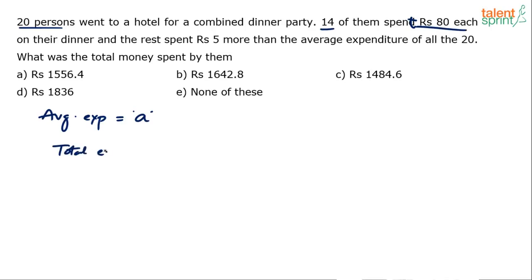14 of them spent Rs 80 each. I'm trying to find out the total expenditure. What will be the total expenditure? Total expenditure is going to be 20 into a. Average is a, there are total 20 persons, so total expense 20 into a. This should be equal to what?